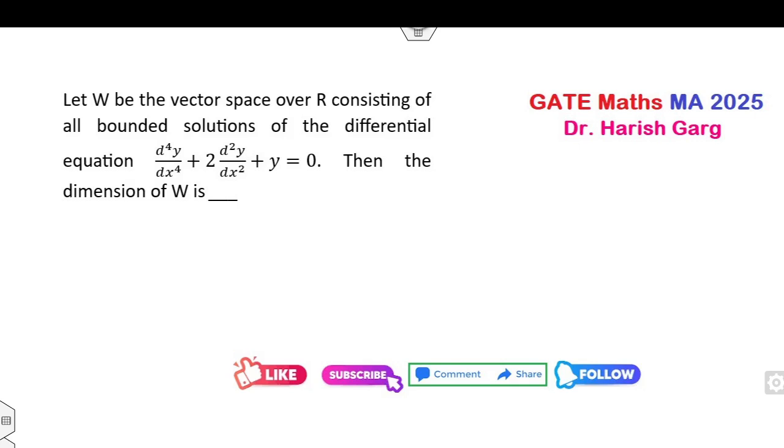Now, how can you solve this question related to vector space? Your target is to find the dimension of W. It's a very simple question. You can solve this problem within 15 seconds, but how?